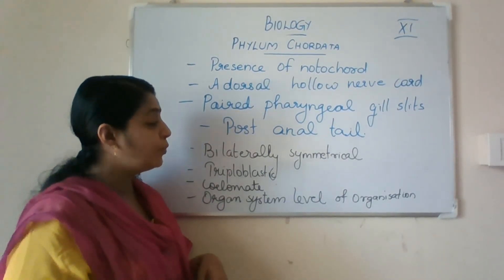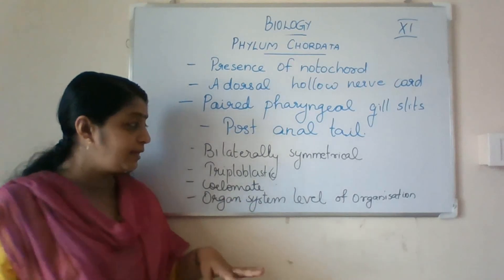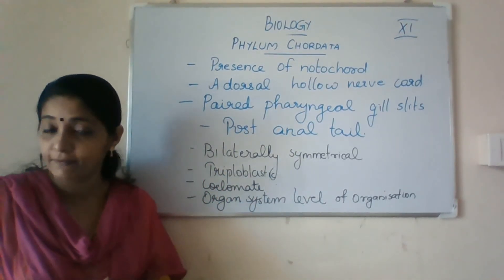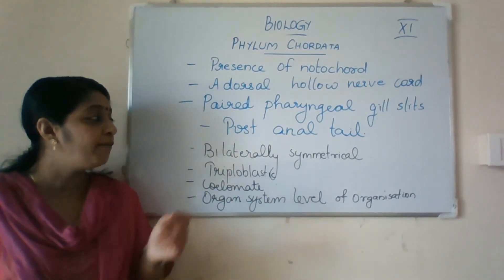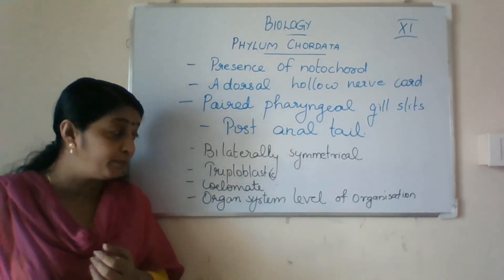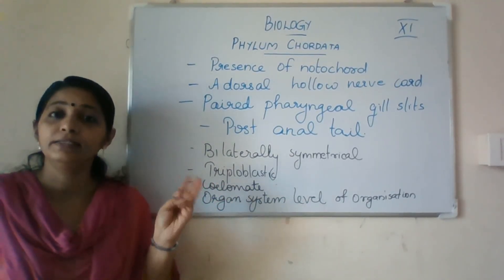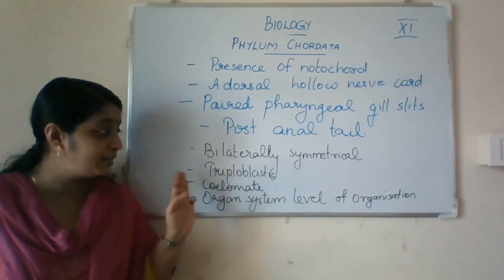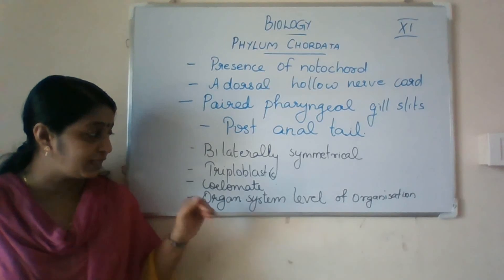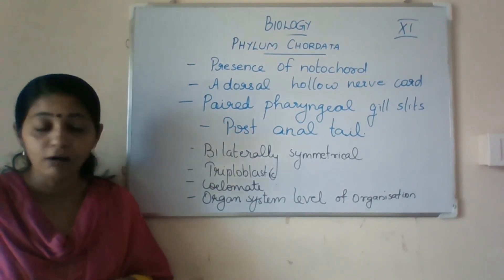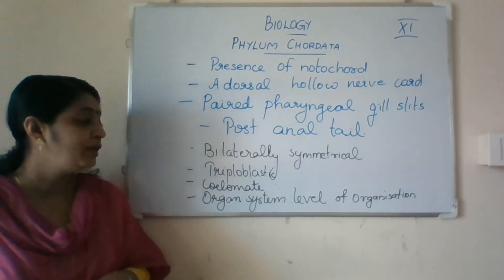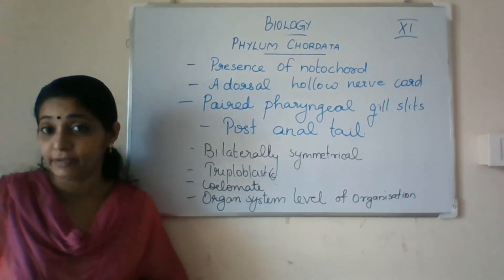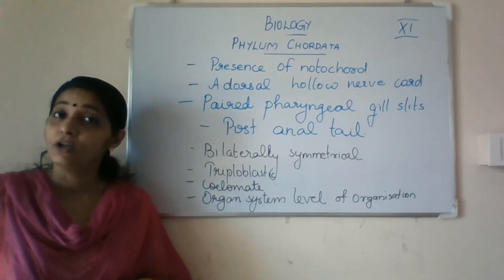These are the main features of Phylum Chordata. The general features include bilateral symmetry, which we have learned about. They are triploblastic — three germ layers are present. Then coelomate — they have a coelom. And organ system level of organization. So these are the main features of Phylum Chordata.